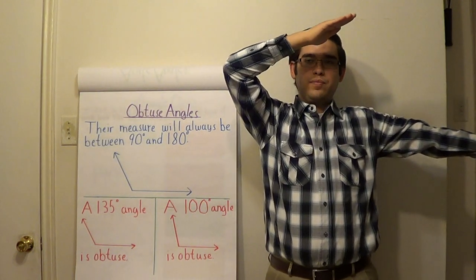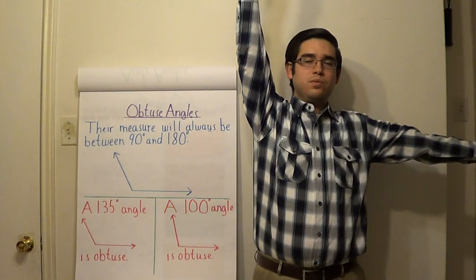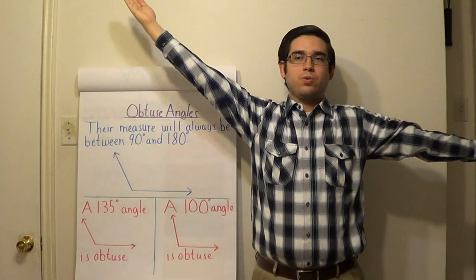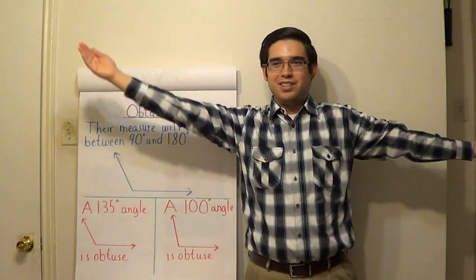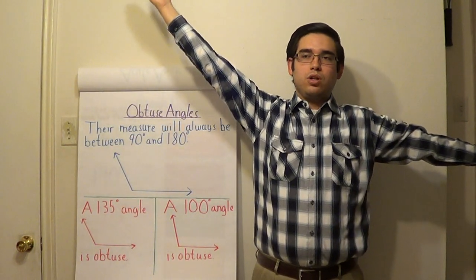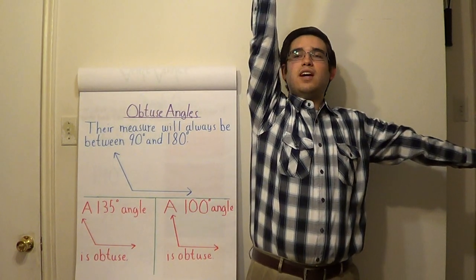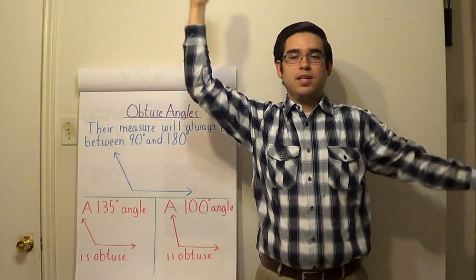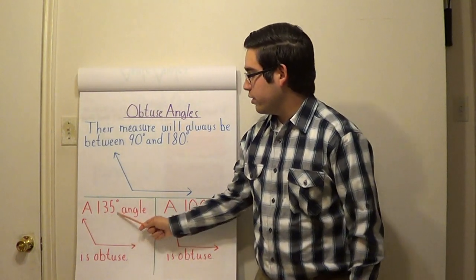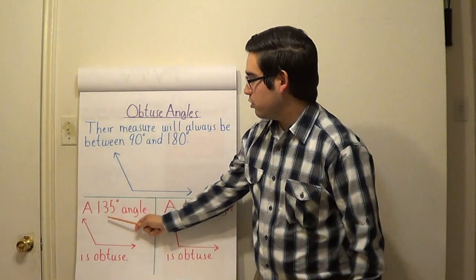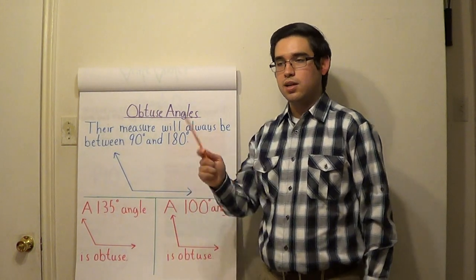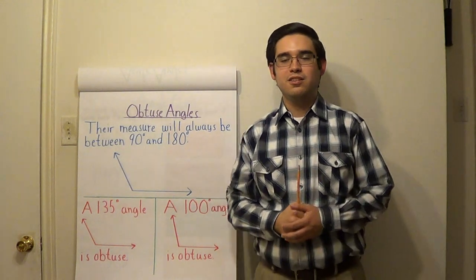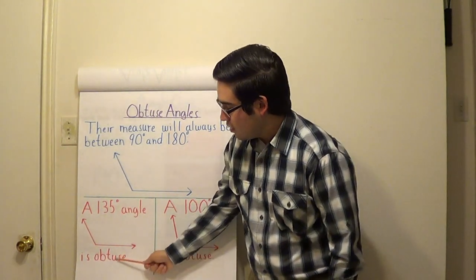If this is an acute angle and this is a right angle, what's going to be obtuse? Exactly — it's going to be one where your right arm is slanted towards the right. So yes, this is how an obtuse angle will look like. Anything that's between a 90 degree angle and 180 degrees — anything between that range — will be an obtuse angle. A 135 degree angle: is 135 between 90 and 180? Yes it is, so it is an obtuse angle.